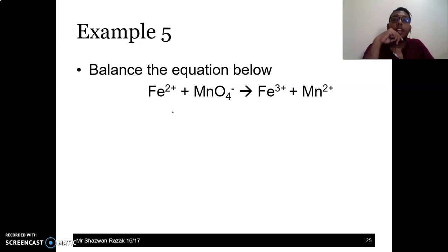And then MnO₄⁻ becomes Mn²⁺. So we know that this is a redox equation. In order to balance this redox equation, the first thing you have to do is divide it into two equations. How to do it? We look at the same species. So this will be Fe²⁺ becomes Fe³⁺, while another one is MnO₄⁻ becomes Mn²⁺.